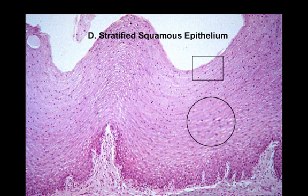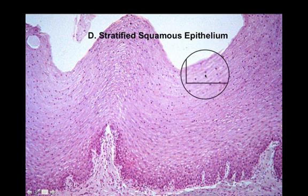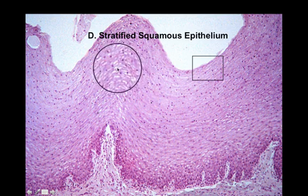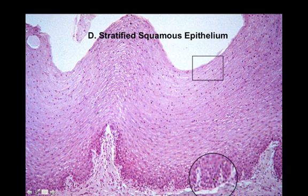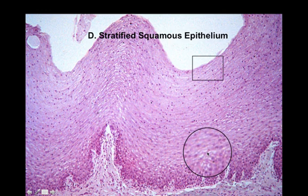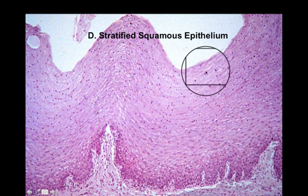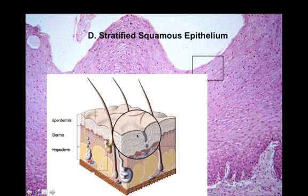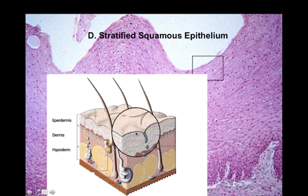Now let's look at stratified squamous epithelium — many layers thick of flat cells. The little black dots are the nuclei, and the cells are very flattened. This is your epidermis, the top layer of skin. Living cells are produced at the bottom layer and pushed upward over time, reaching the apical surface where they provide a lot of protection. These surface cells are dead because they are so far from the nutrient source below. The stratified epithelium spans from the deep dark layer all the way to the apical surface.